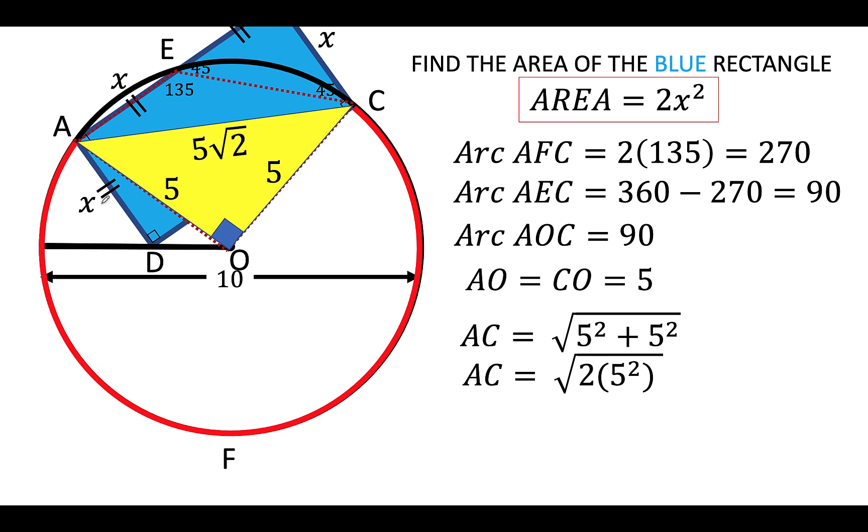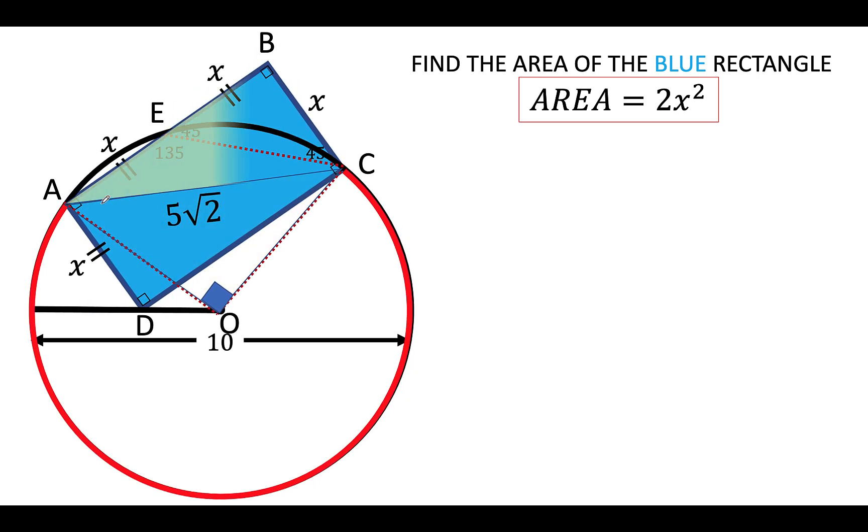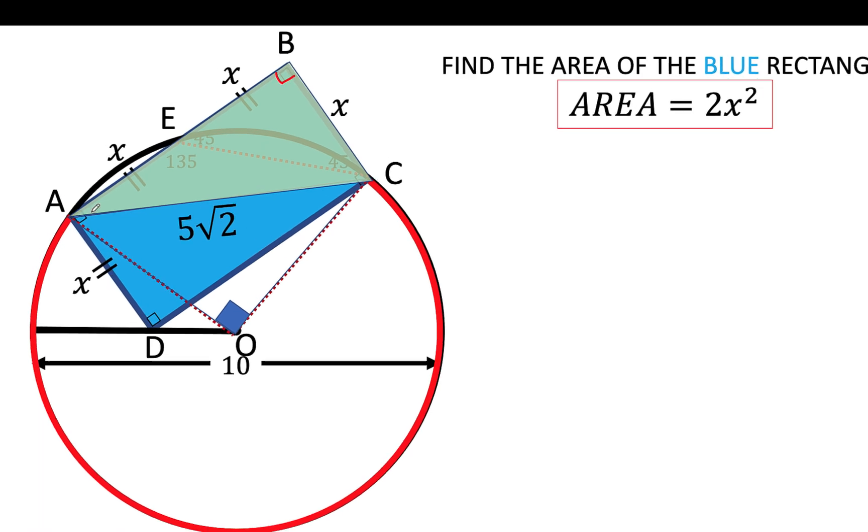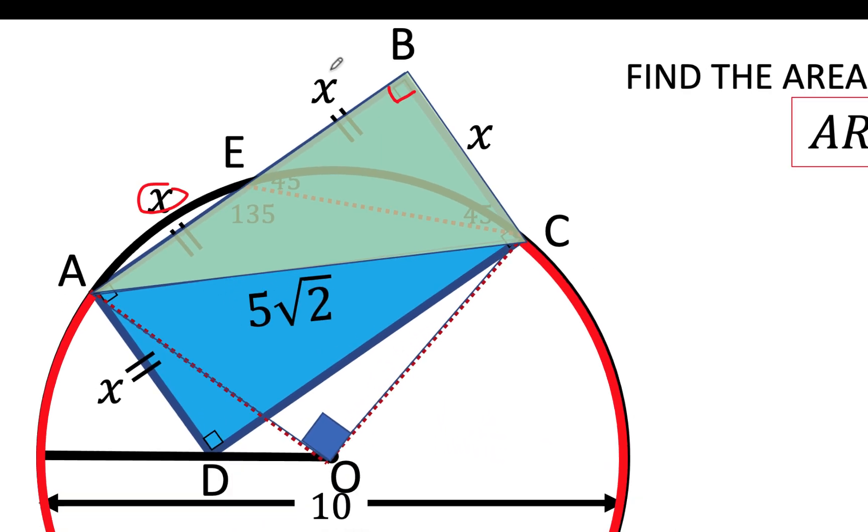Now in order to find the value of x, we can now concentrate on this other right triangle ABC, where angle ABC is a right angle. We know that the hypotenuse is 5√2, this leg BC is equal to x, and this other leg AB is equal to 2x.